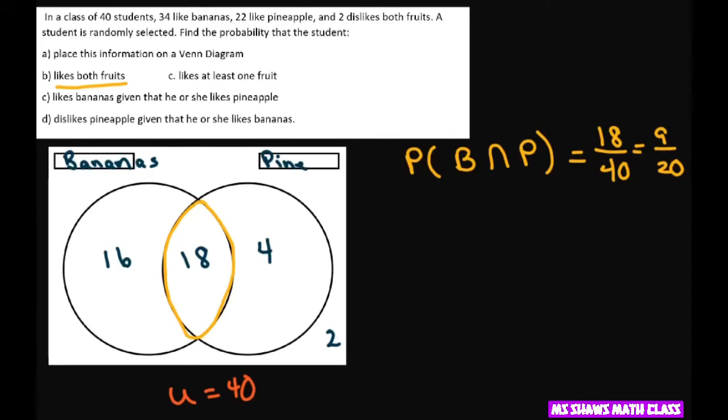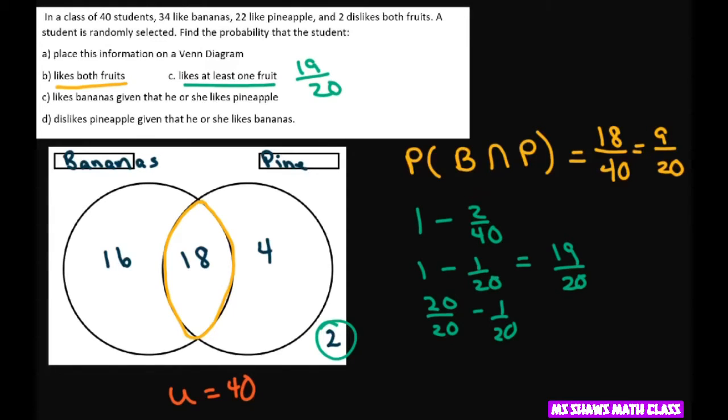And at least one fruit means one minus that. So one minus not like any fruits is 2 out of 40. So that's going to be one minus 1 out of 20. So that's going to be at least one fruit. That's 20 divided by 20 minus 1 divided by 20. It's 19 divided by 20. So that's a big chunk there. And this was 9 out of 20.